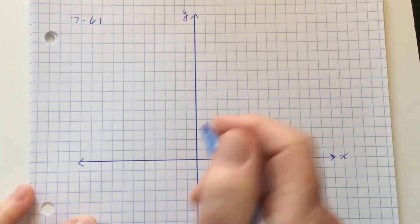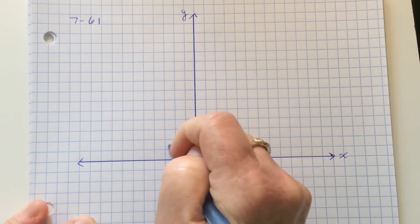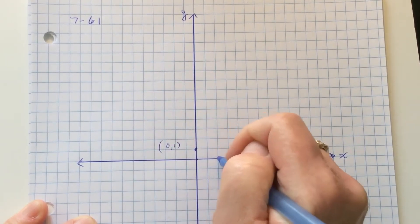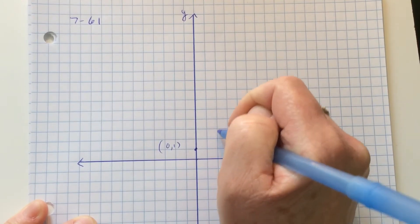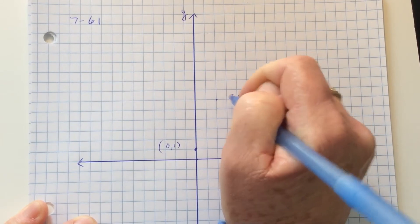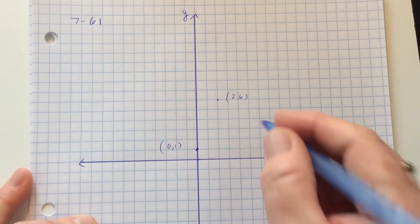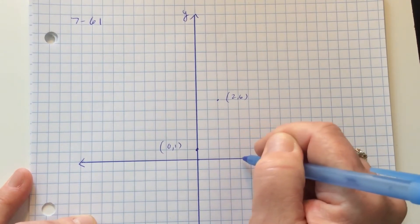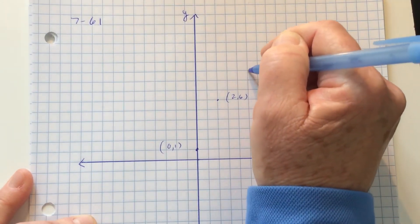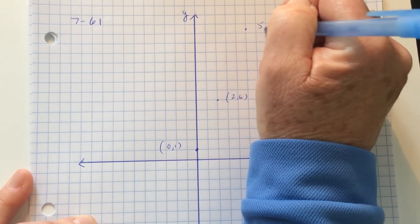The first point is 0,1, the second point is 2,6, then 5, 13.5.